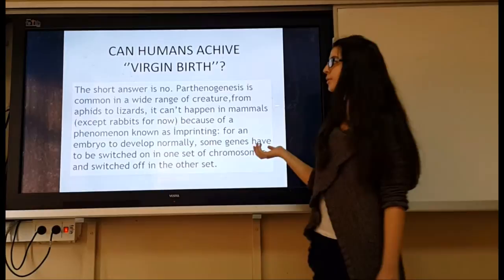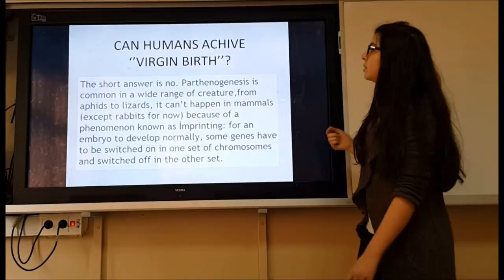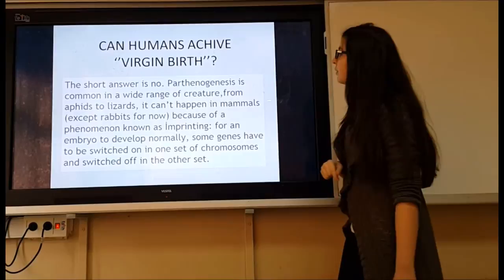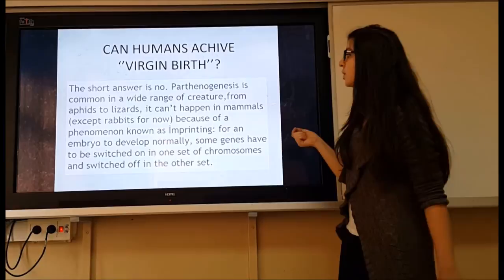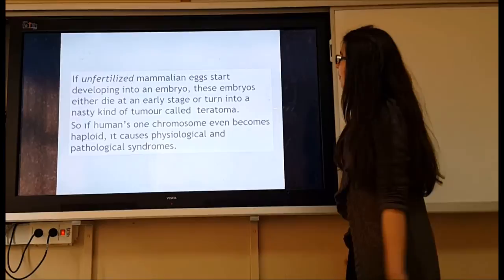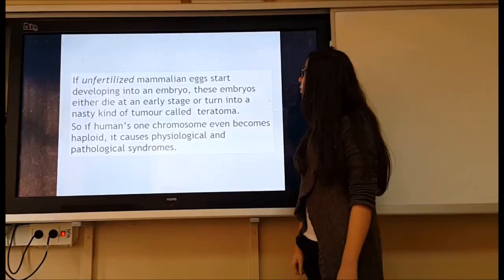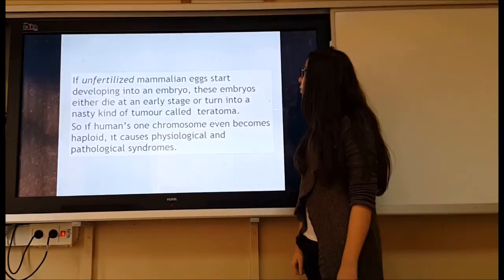Can humans achieve virgin birth? The short answer is no. Parthenogenesis is common in a wide range of creatures, from aphids to lizards, and can occur in some mammals such as rabbits. However, because of a phenomenon known as genomic imprinting, for an embryo to develop normally, some genes must be switched on from one set of chromosomes while being switched off in the other set. If unfertilized mammalian eggs start developing into an embryo, these embryos either die at an early stage or turn into a nasty kind of tumor called a teratoma.